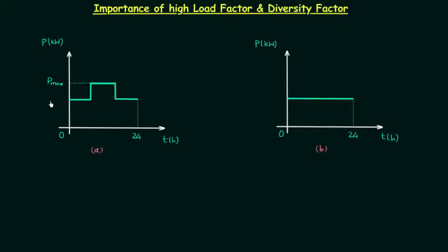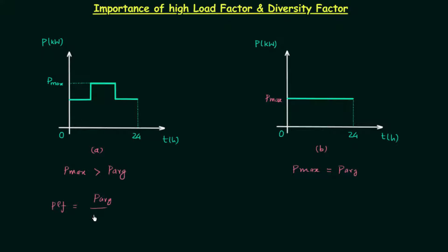In load curve A, P_max is the maximum power demand. If you see the load curve you will find the maximum power demand P_max is greater than the average power demand. The plant load factor is equal to average power over the maximum power demand, and from here we can say that the plant load factor is less than unity — less than 100 percent.